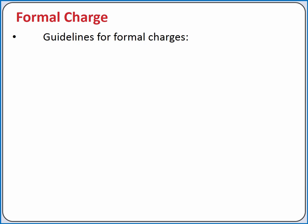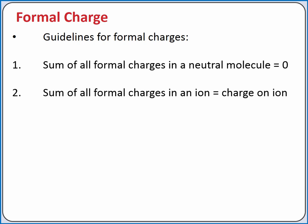Formal charge can help us evaluate different resonance structures to determine if one is better than another. When assigning formal charges and comparing resonance structures, we can use the following four guidelines. First, the sum of all formal charges in a neutral molecule is zero. Second, the sum of all formal charges in a polyatomic ion is equal to the charge on the ion.